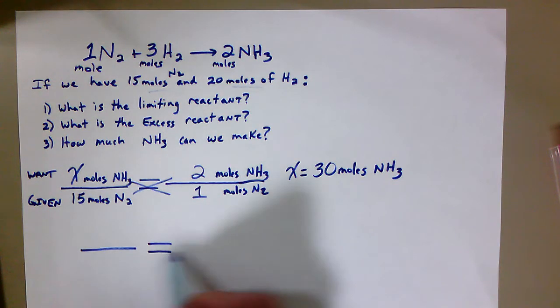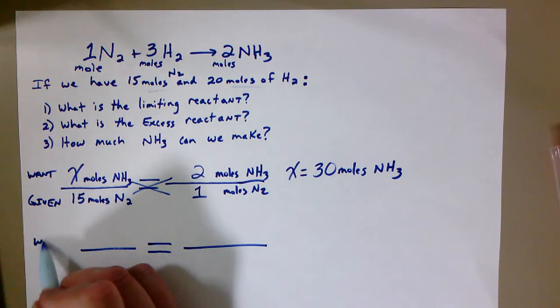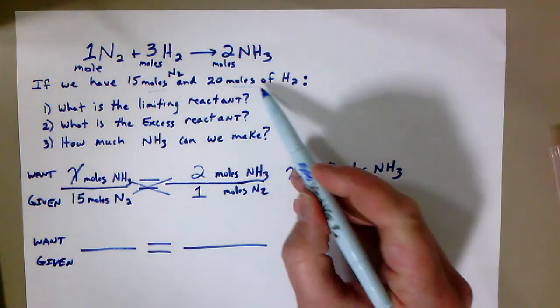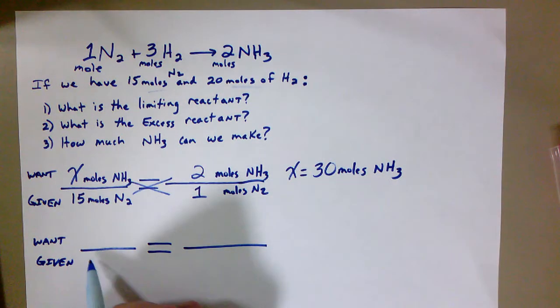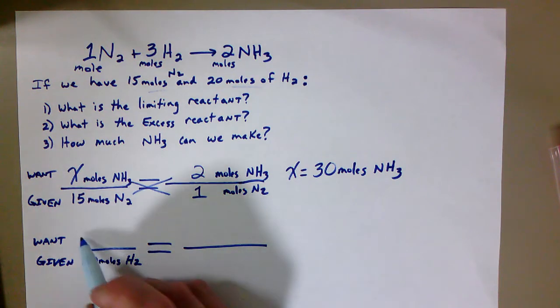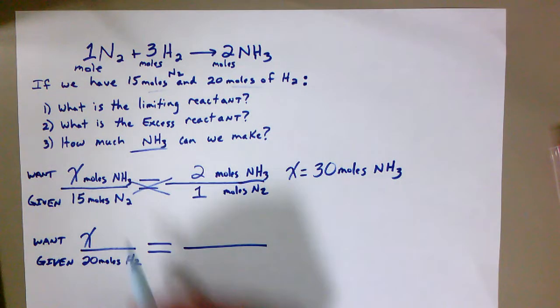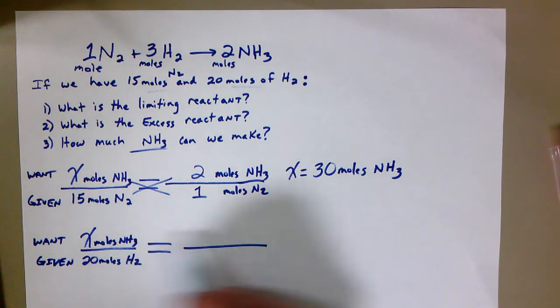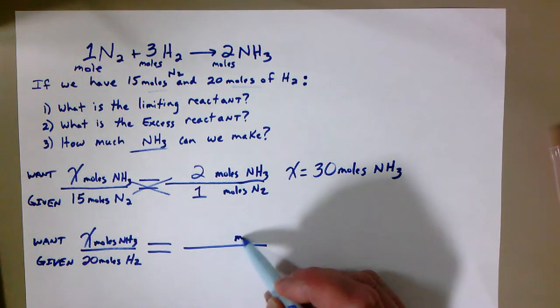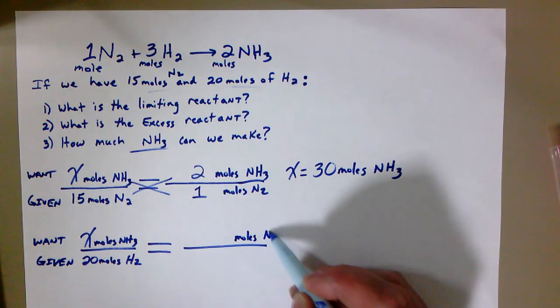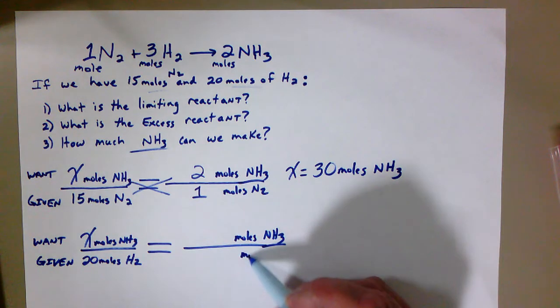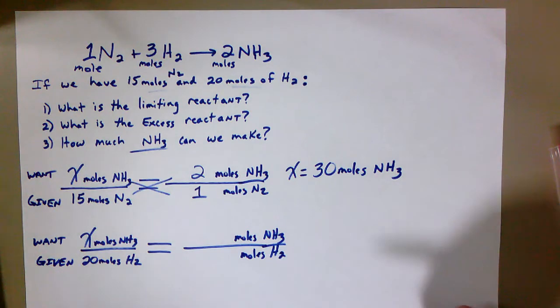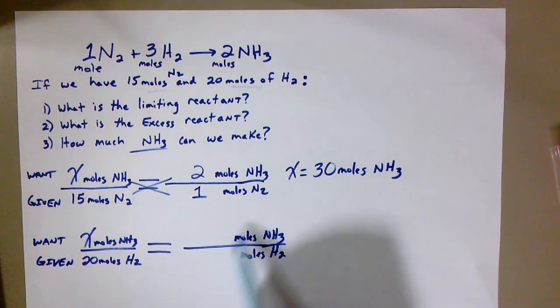But we don't know yet if that is going to be the case because we have another ingredient in there, and that other ingredient is H2. Okay, so again, set it up. What does the question want us to find? What does the question give us? What is our given? In this case, we are given the fact that we have 20 moles of H2. And the want is still the same. We still want to figure out how many moles of NH3 we have. So I'm going to just keep that the same on top. And again, transfer those units over, right? So we're going to have moles of NH3 on the top on both sides, and we're going to have moles of H2 on the bottom on both sides.